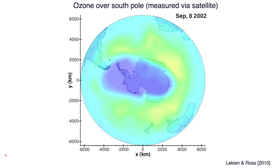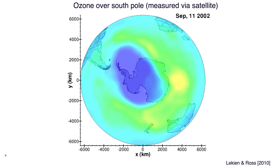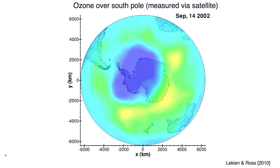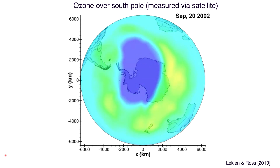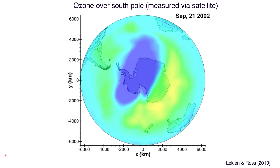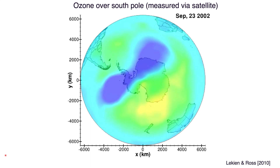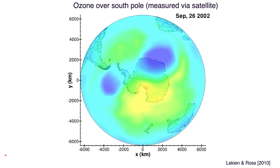We can use these for other studies as well. For instance, the ozone over the South Pole, measured by satellite, shown here in 2002. The large blue blob in the middle is depleted of ozone — it's the ozone hole surrounded by a polar vortex. And in 2002, it separated into two roughly equal pieces.